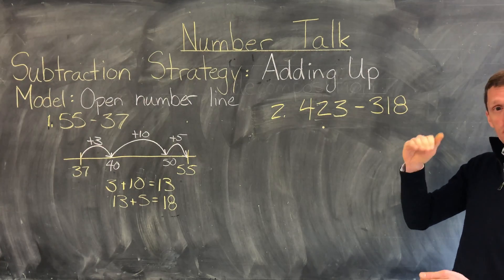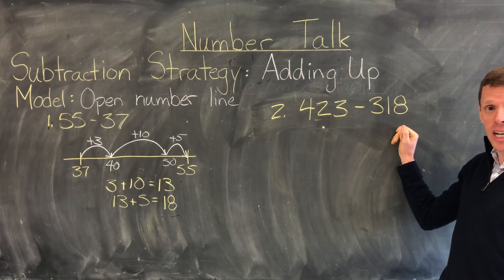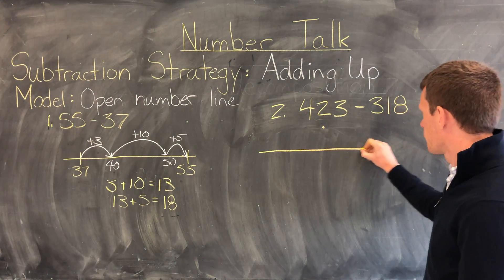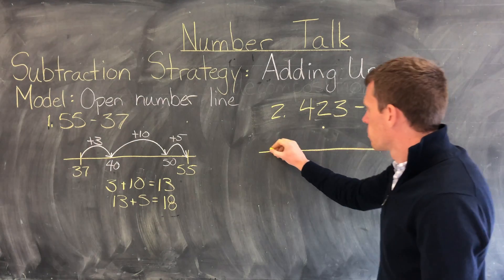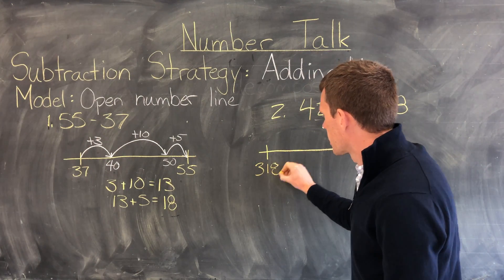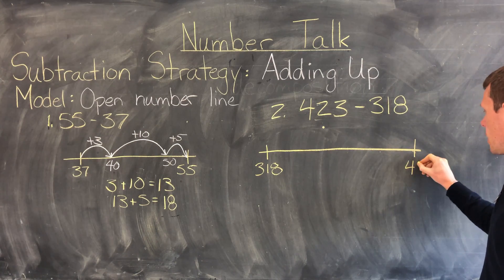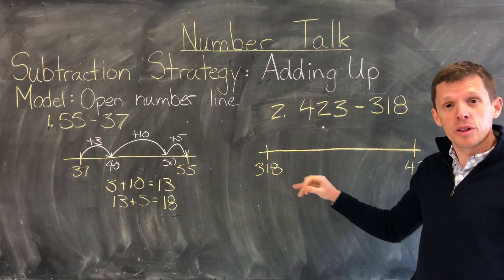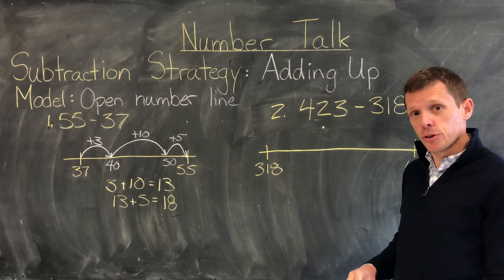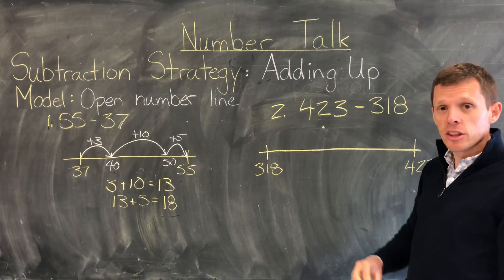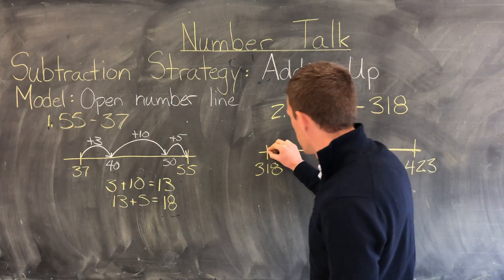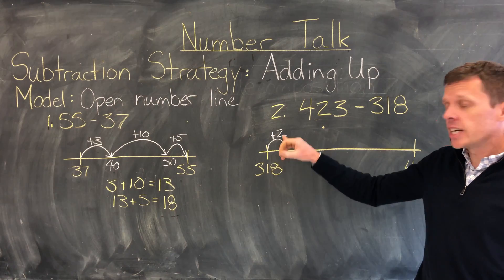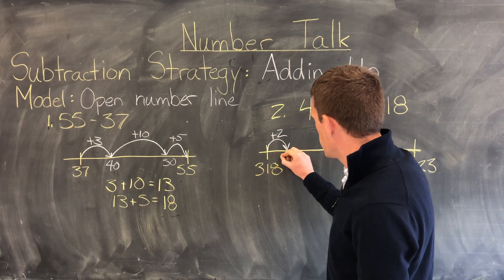We're just going to do some jumps to span the distance from 318 to 423. So I'm going to quickly just draw the number line. At this end I'm going to write 318 and 423 up here. Again I'm looking for my friendly numbers. So I'm going to start with a very small jump of 2 because that will get me to 320 which is a little more of a friendlier number than 318. So 318 and I add 2 that gets me to 320.